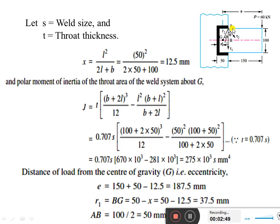The polar moment of inertia of the C section will be given in the PSG data book. We have to find out and substitute the values. The value of polar moment of inertia J is equal to 275 × 10³ s mm⁴.